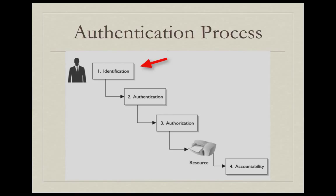The first is identification. When a user first starts at a company, they are given a user ID and usually a password, but it could be something else. They could register fingerprints, they could be given a token. With this, they're provided with a way to identify themselves. Good companies will also make sure that the person standing in front of the administrator getting this information is the person they claim to be.